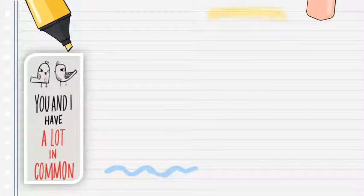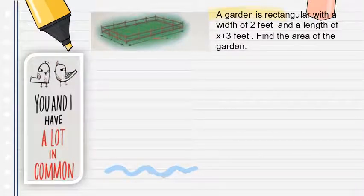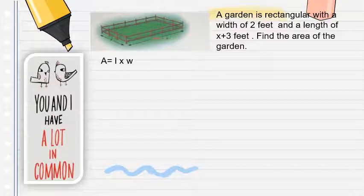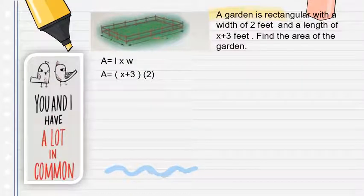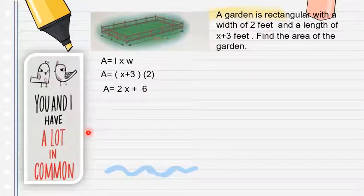You and I have a lot in common. Here is the garden problem: a garden is rectangular with a width of 2 feet and a length of x plus 3 feet. To find the area of the garden, we use the formula: area equals length times width. The length is x plus 3 and width is 2. Using the distributive property — 2 times x and 2 times 3 — the answer is 2x plus 6.